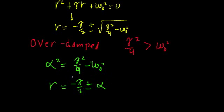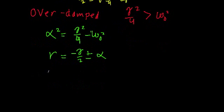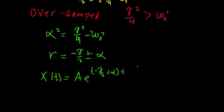So now that we have our two roots, we can find the general solution. And we'll find that x of t is equal to a constant A times e raised to one root negative gamma over two plus alpha times time, plus another undetermined coefficient times e raised to the negative gamma over two minus alpha times time.